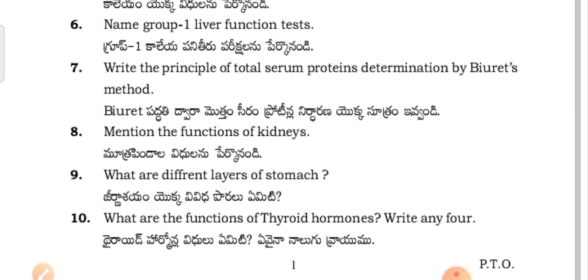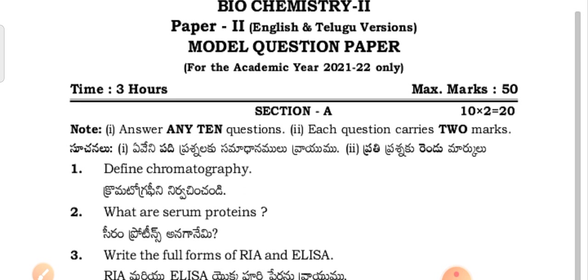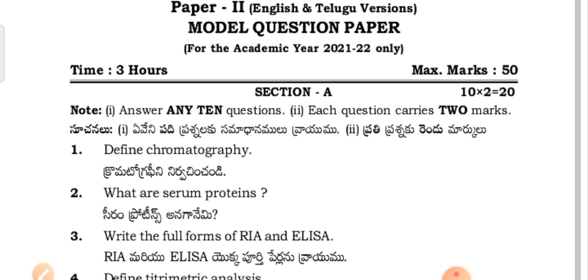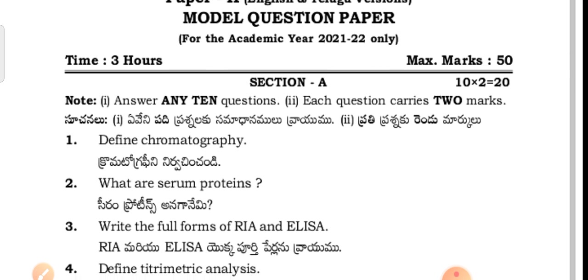For all the intermediate vocational students according to your course, you don't have any choice in Section A. They will give 10 questions and out of 10 questions you should attempt all the questions. But this year, for 2022 academic year students who are going to write this examination, you people have the 50% choice. In Section A also you have the choice.